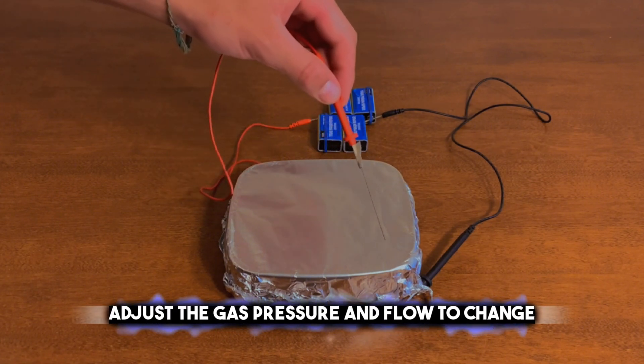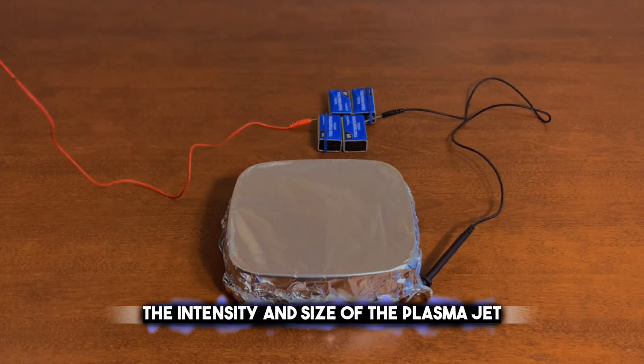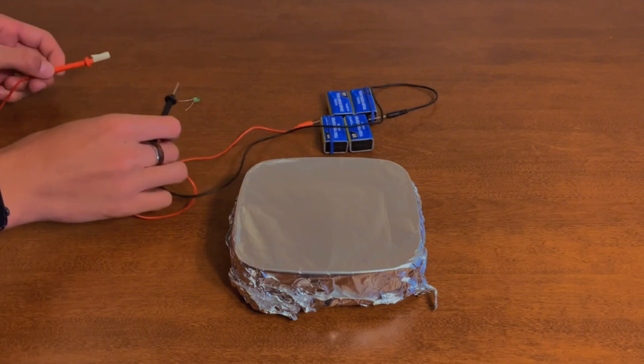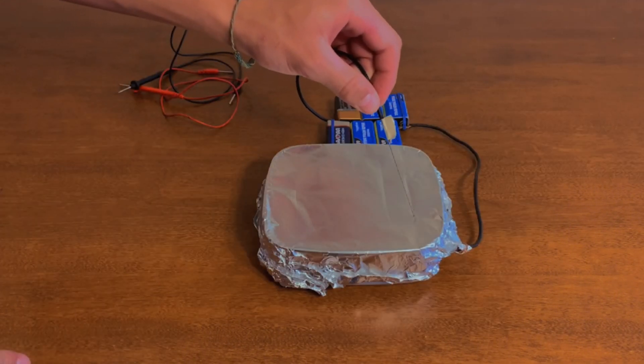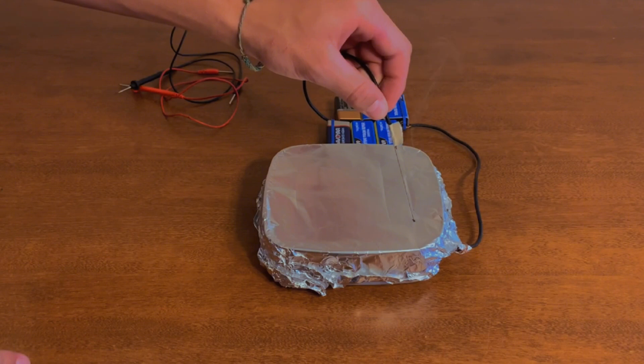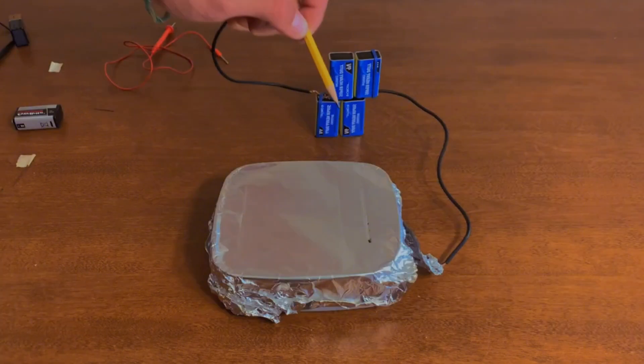Adjust the gas pressure and flow to change the intensity and size of the plasma jet. Use the plasma cutter for cutting various types of metals, such as steel, aluminum, or copper, and create different shapes and designs.